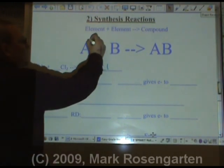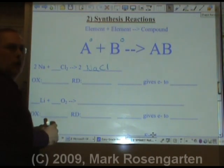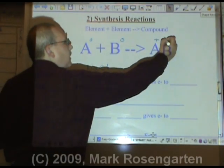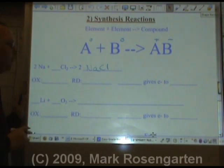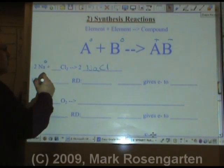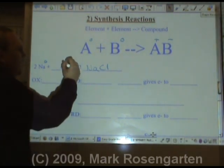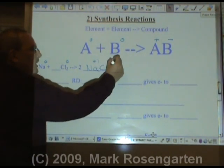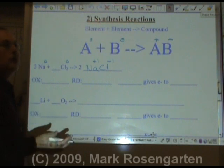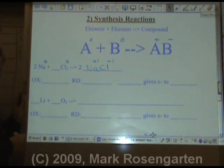Now, when the elements are by themselves, they have no charge. When they're in a compound, they do have charge. That's how they stick together to make the compound in the first place. Sodium has no charge by itself. Chlorine has no charge by itself. Sodium is plus one, chlorine is negative one, because you can look those charges up on the periodic table.